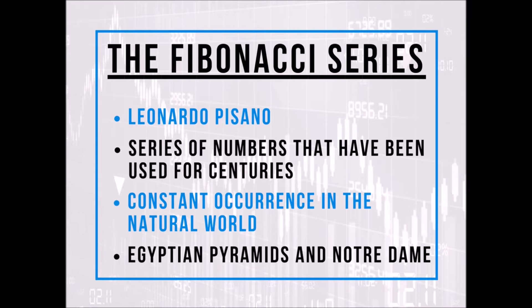Many European mathematicians of his day were persuaded to use his Hindu-Arabic system rather than the Roman numeral system. Fibonacci is credited with discovering a series of numbers which has been used by mankind for centuries. Its use may have started as early as the Egyptians, in the design of the pyramids, as well as by Renaissance artists.